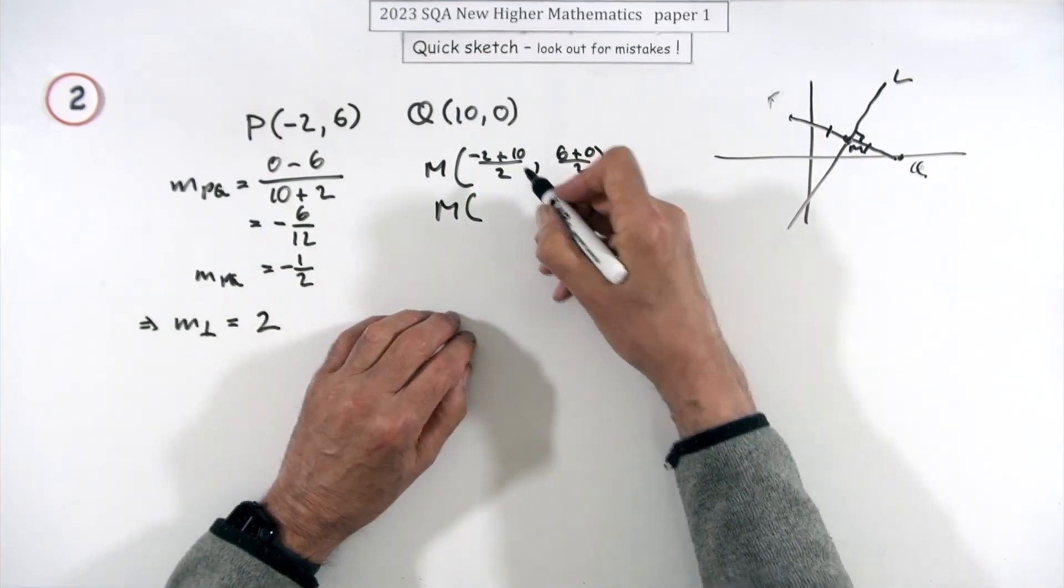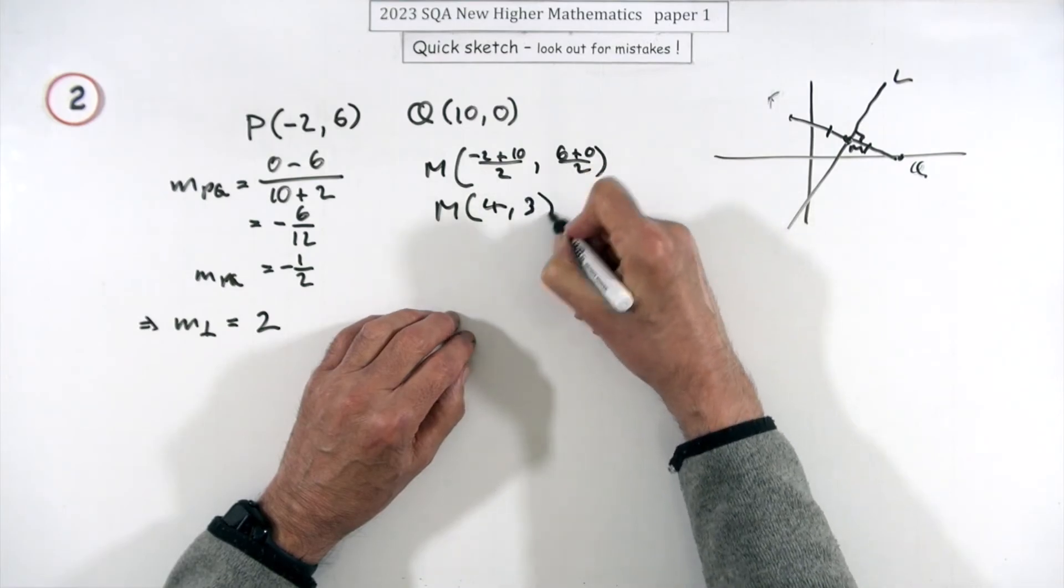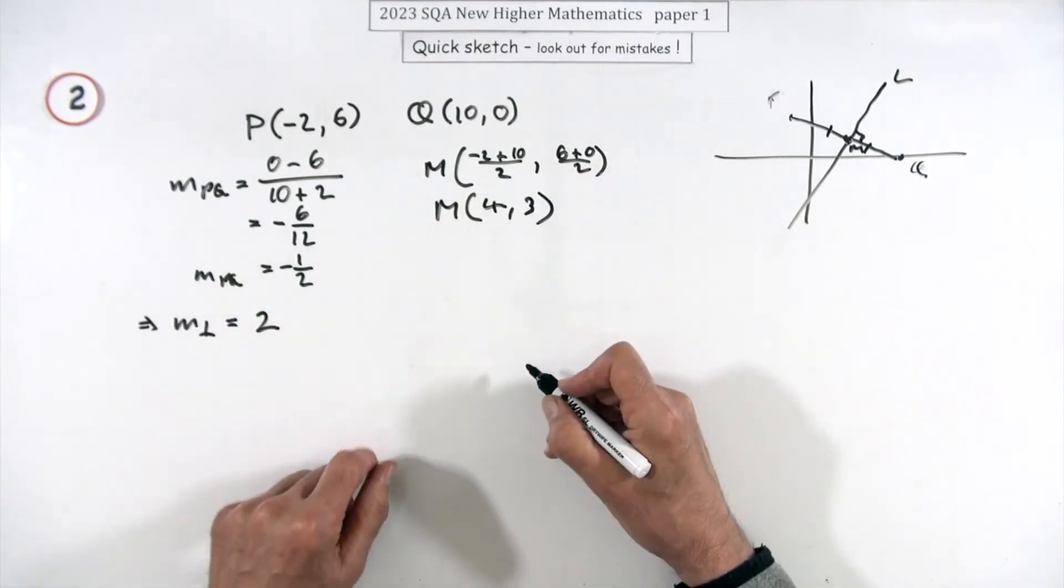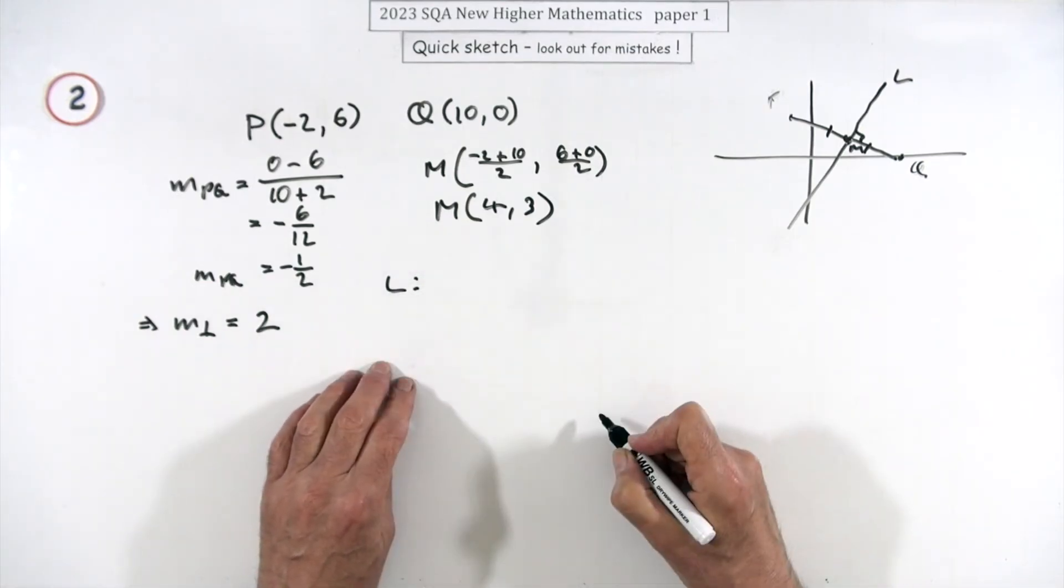So M's going to be, which you could just go straight in with, so that's going to be 8 upon 2 which is 4, now 6 upon 2 which is 3. So that may well be three marks so far: one for that, one for that, one for that. Now you just put it together to get this perpendicular bisector.